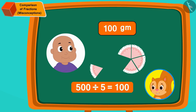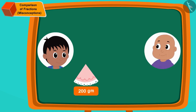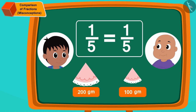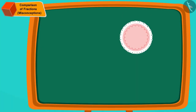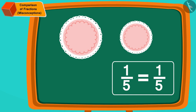Children, now can you see that Rajoo has got two hundred grams of cake and Babloo has got one hundred grams of cake? Even though the fractions of the parts of Rajoo and Babloo's pieces are the same, the amount of cake that Rajoo got is more than the amount of cake that Babloo got. Therefore, Babloo's statement is correct.